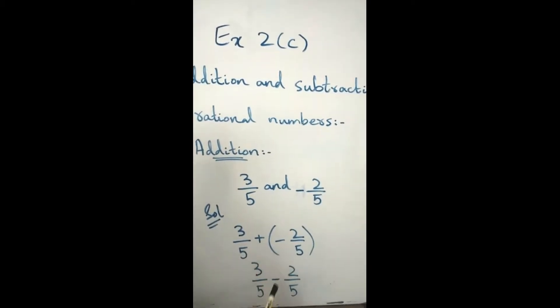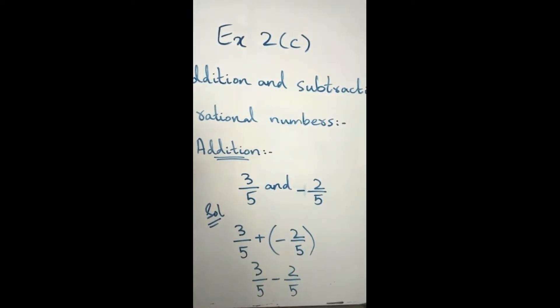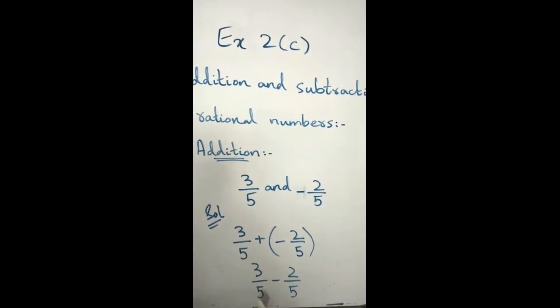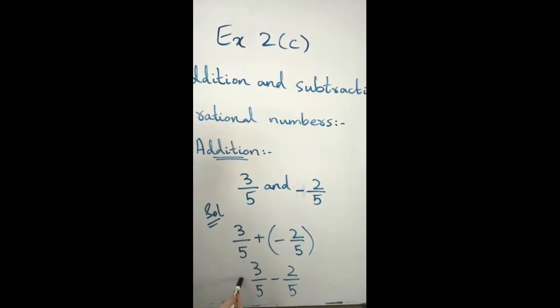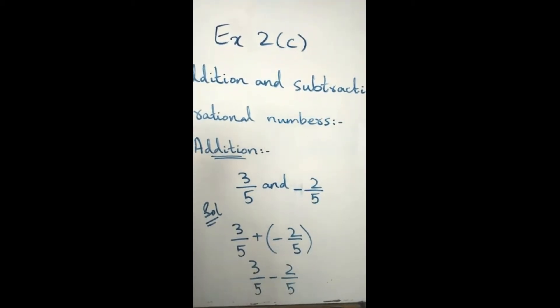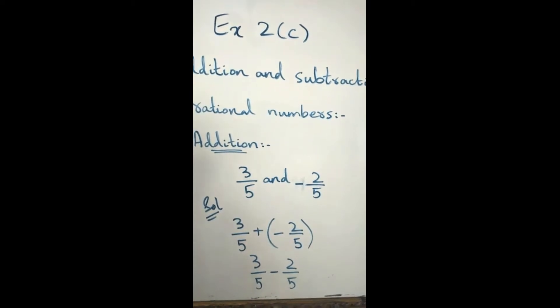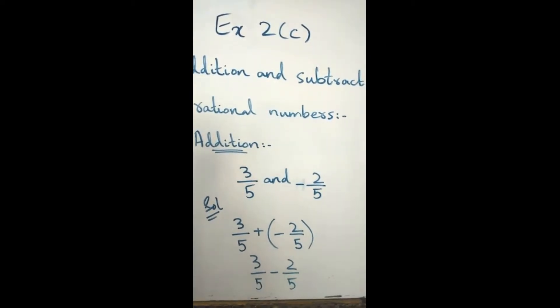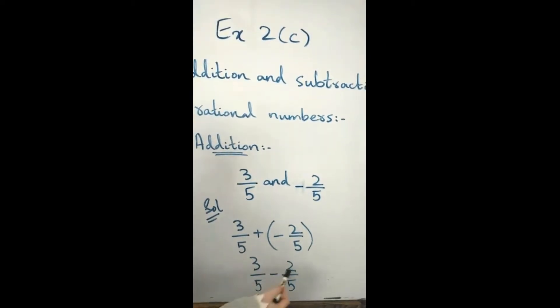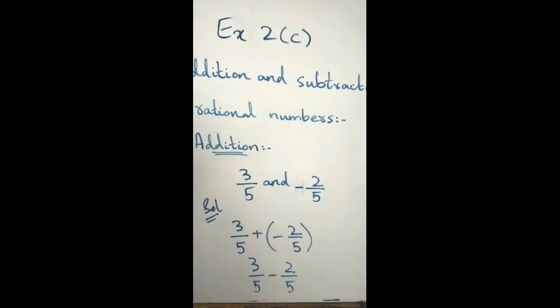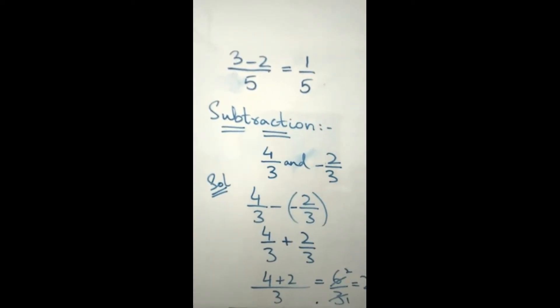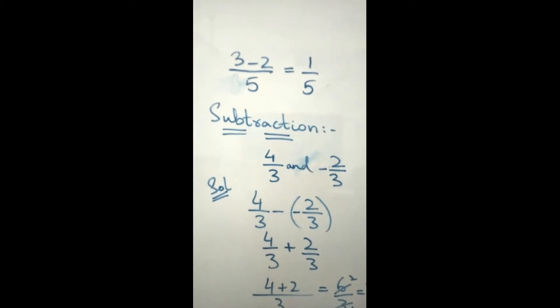3/5 plus (-2/5). We have 5 as the denominator in the first term and 5 as the denominator in the second term. That's why I will write 5 in the denominator and 3 minus 2 in the numerator. 3 minus 2 over 5 equals 1/5. This is the answer.